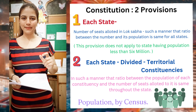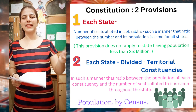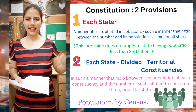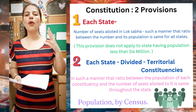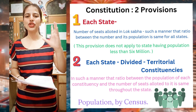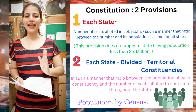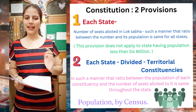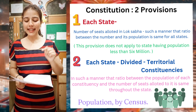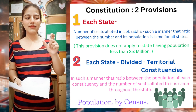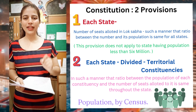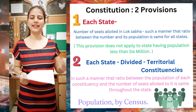That means for all states — Uttar Pradesh, Maharashtra, Madhya Pradesh, Goa, Sikkim — all these states: their population and the number of seats, the proportion, the ratio, should be the same in every state in India. You also have to remember that this provision is not applicable to those states whose population is less than 6 million.